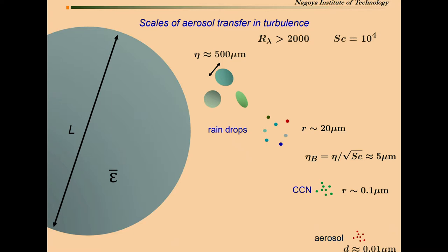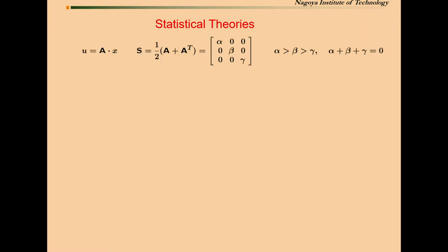Smaller than the Batchelor scale, there is some region, scale region, in which the cloud condensation nuclei play the game. The typical size of aerosol is about 0.1 micrometers. There's a scale separation from here to here and here to here. This is the scale range I'm talking about. This is the inertial convective range, but mostly I'm talking about this range, the diffusive range, when the viscous convective range exists, for when the Schmidt number is very high.